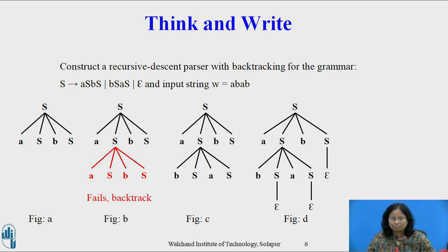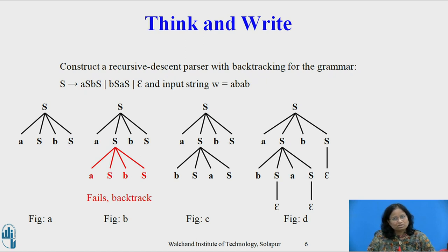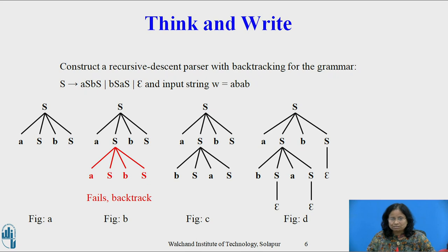The second input symbol is b. We compare b against the next leaf labeled a. Since a does not match b, we report failure and go back to see whether there is another alternative for S. In going back to S, we must store the input pointer in a local variable. We try the second alternative for S to obtain the tree of figure C. The leaf b matches the second symbol. We repeat the same procedure for the remaining symbols of W and produce a parse tree as shown in figure D. We halt and announce successful completion of parsing.